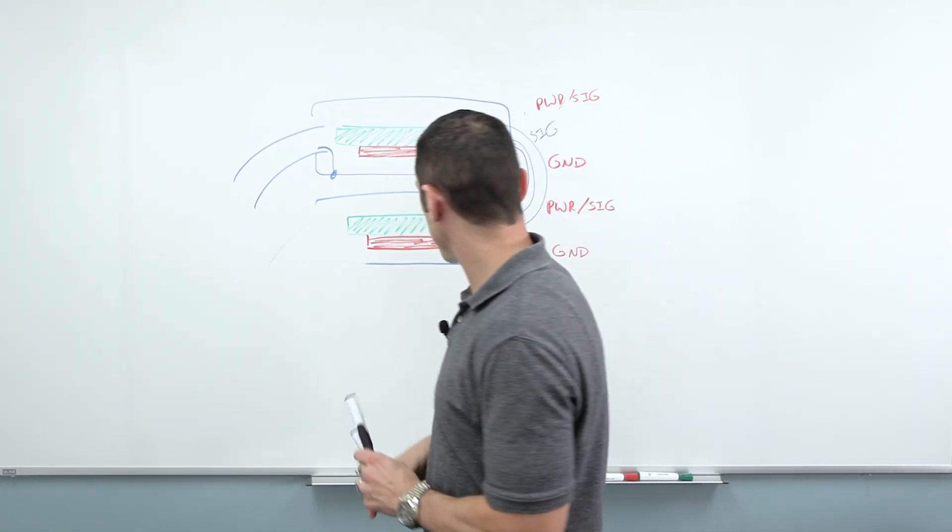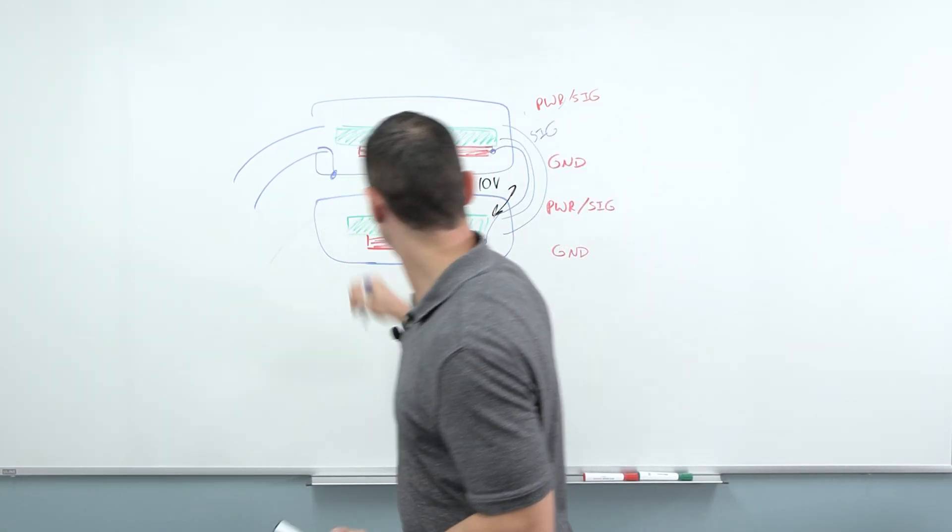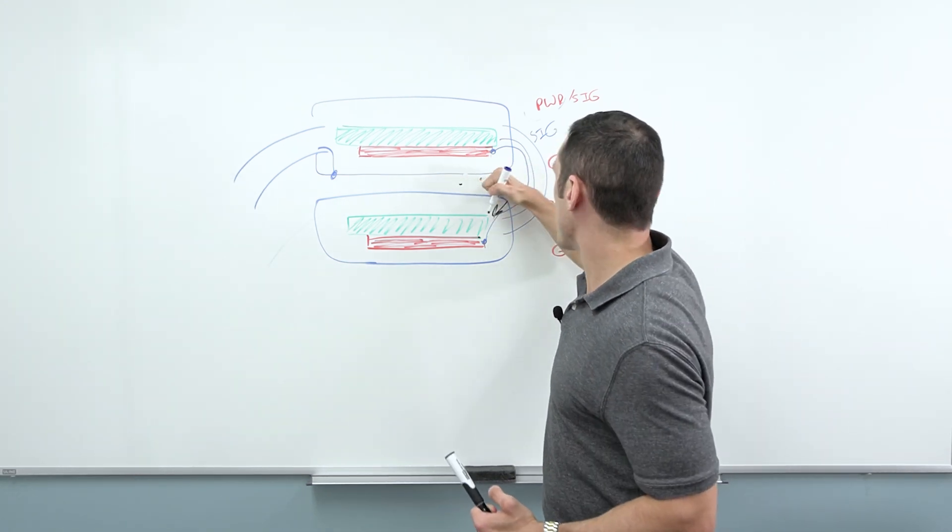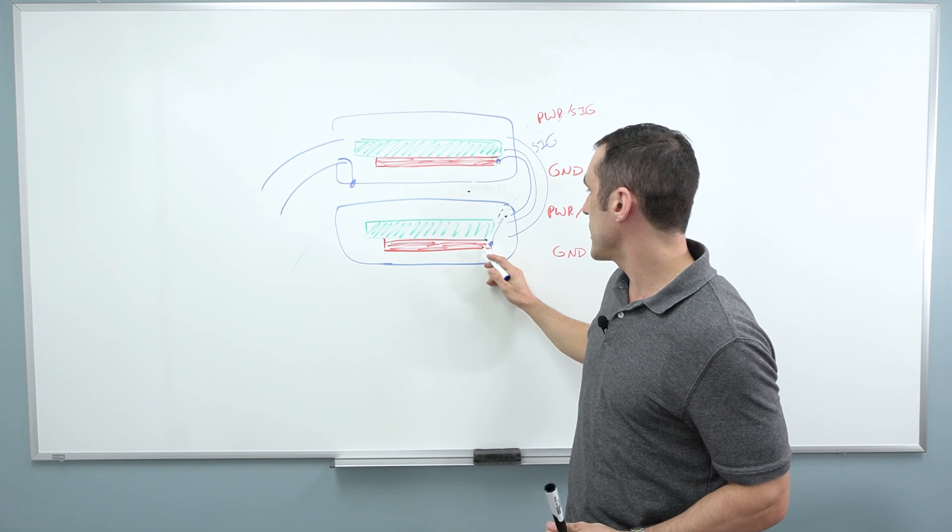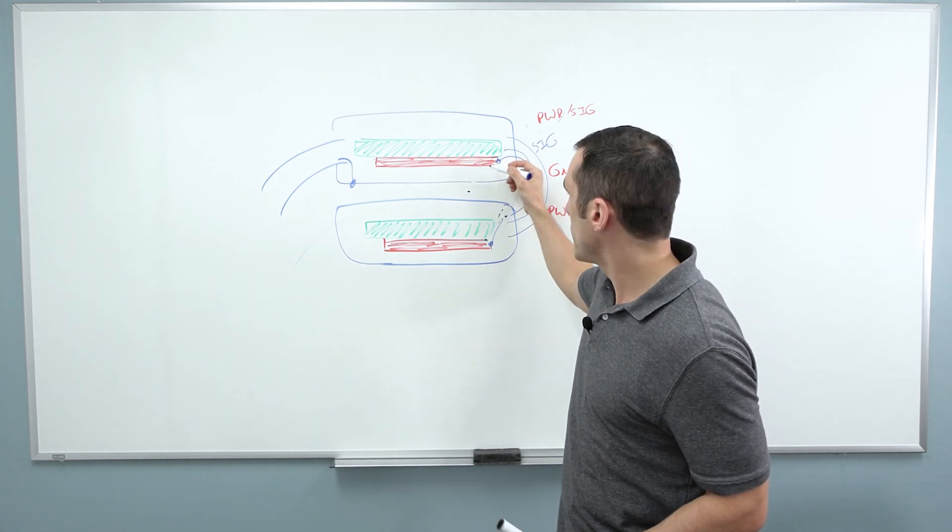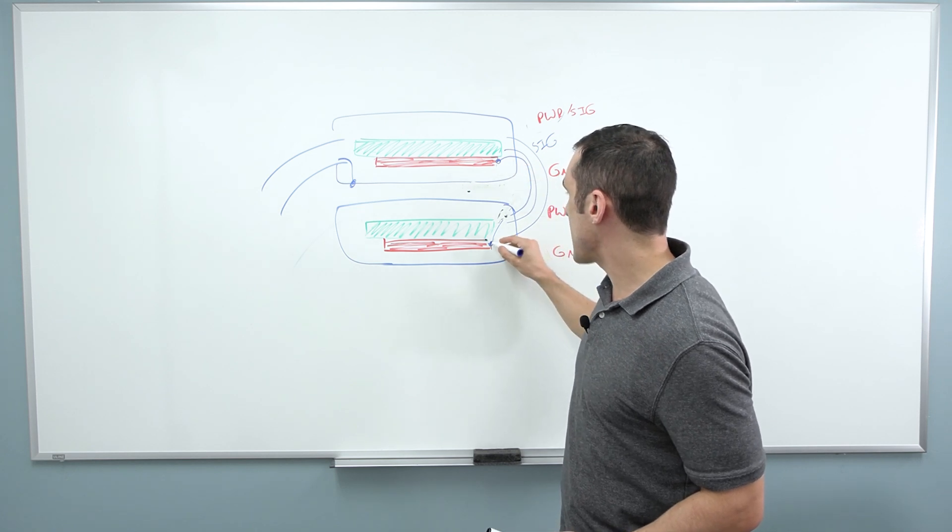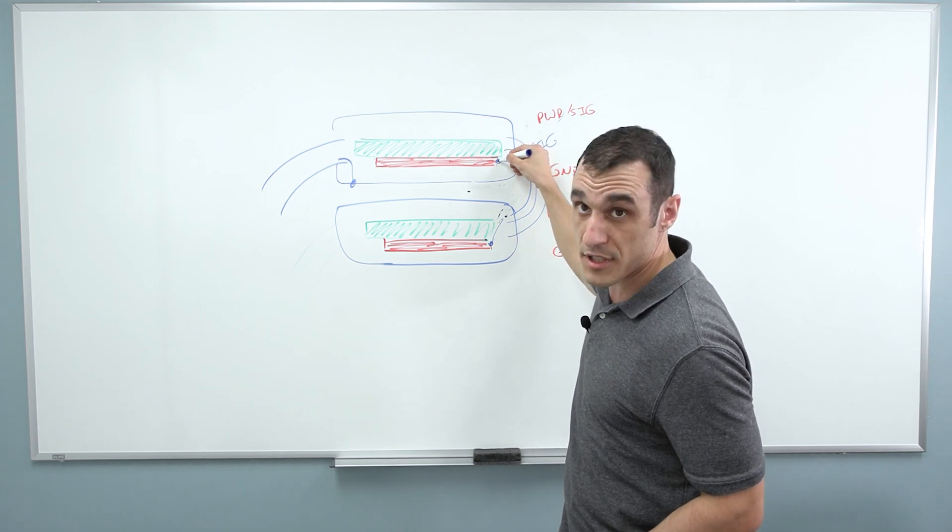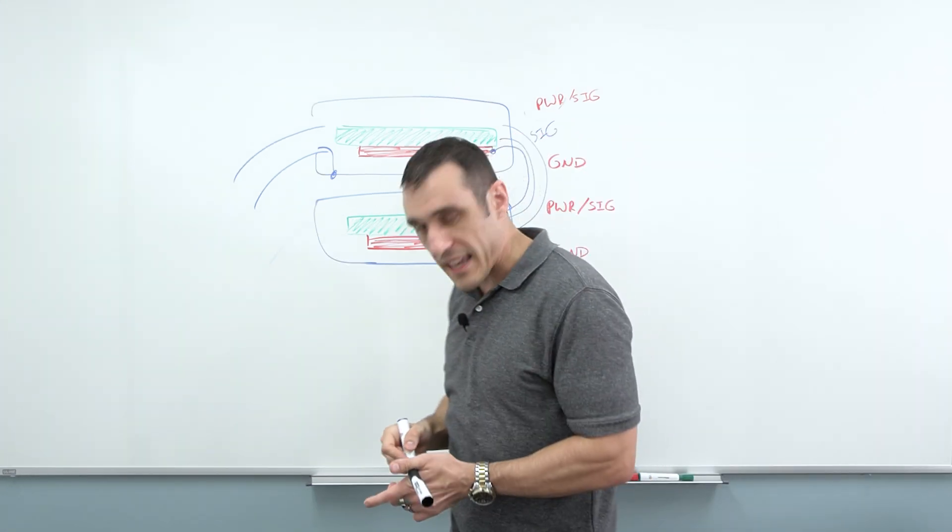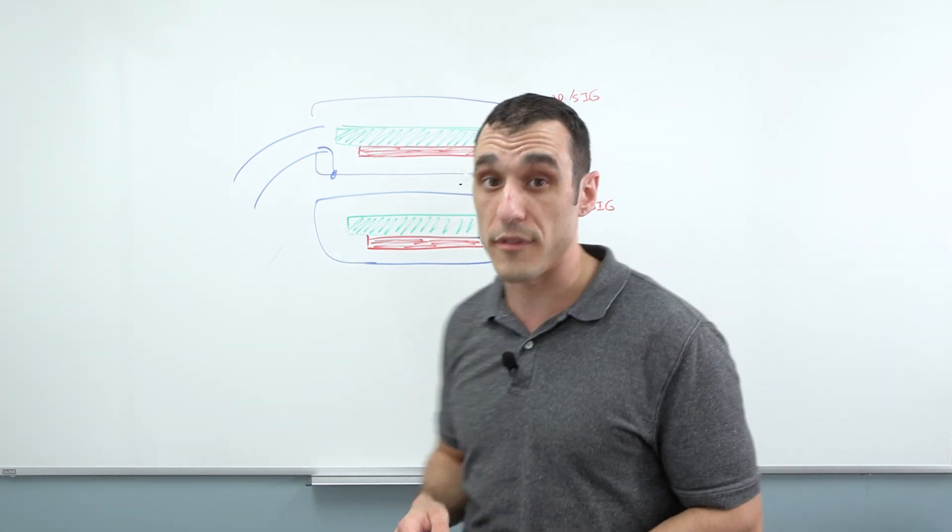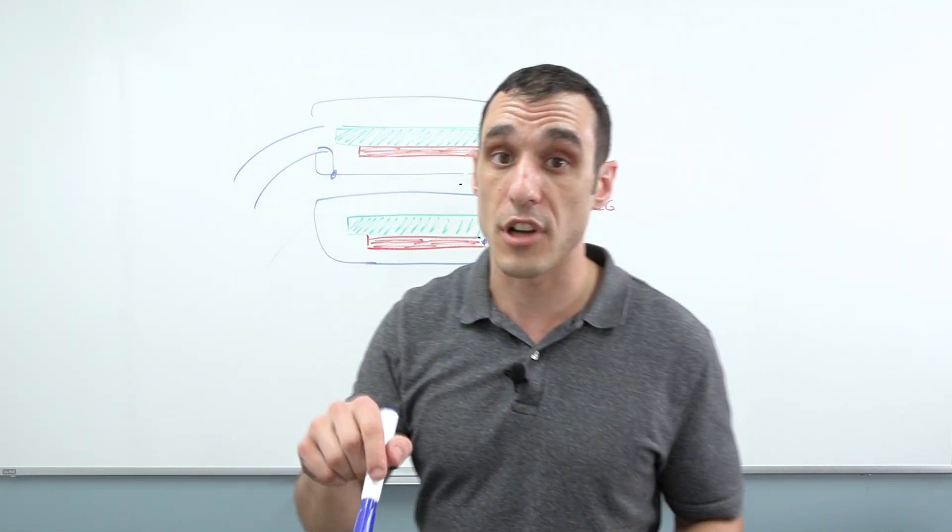If board number two is receiving power from board number one, now we don't really have this problem where this board is going to be at a necessarily higher or lower potential than this board. You're grounding this out. So you're defining this potential here to be at the same as this potential up here for this ground plane. So in that case, it's totally fine. And that matches up with some of the situations that we showed in the previous video where we put ground on the pinout.